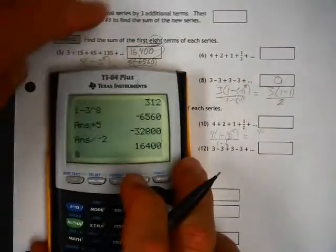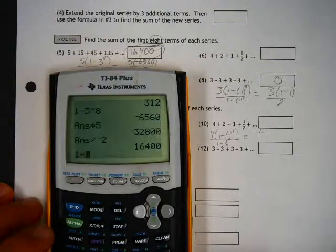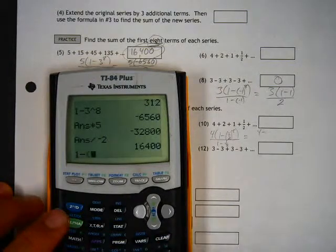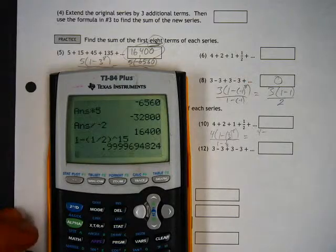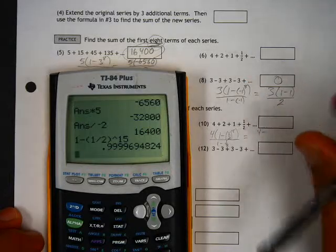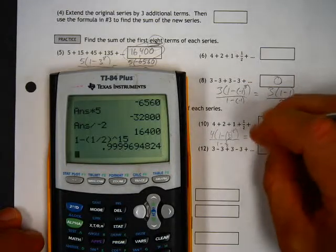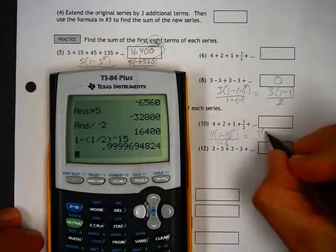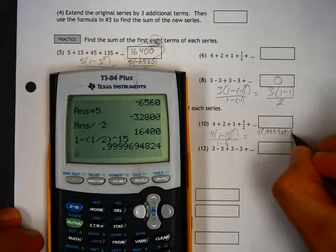and if I do this, 1 minus the common ratio of 1 divided by 2 raised to the 15th power. That's a really, really small number. But I'm going to multiply that by 4. So whatever that is, times 4, 0.9999694824.